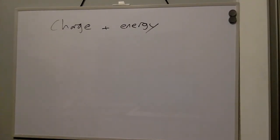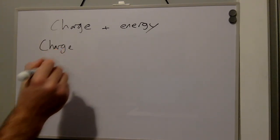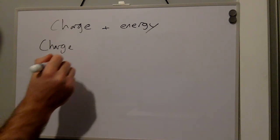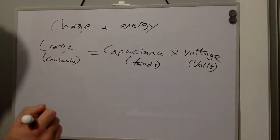The charge and energy of defibrillators are described by the following. Charge is equal to capacitance multiplied by voltage. Whereas energy is equal to half capacitance multiplied by the voltage squared.